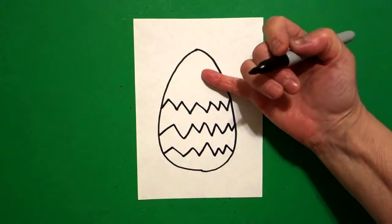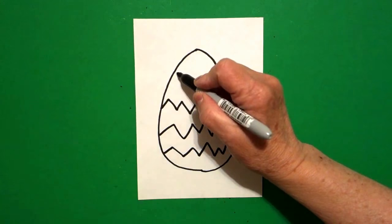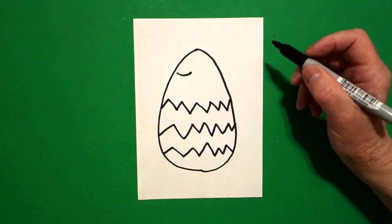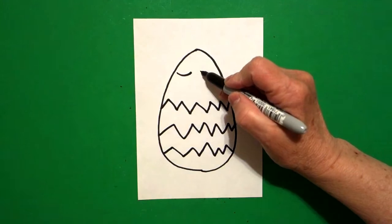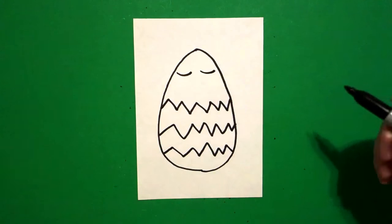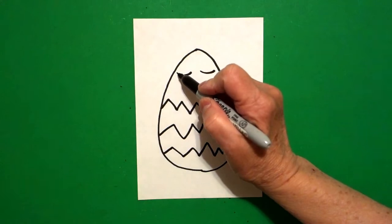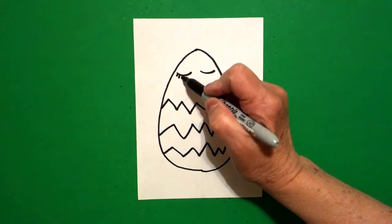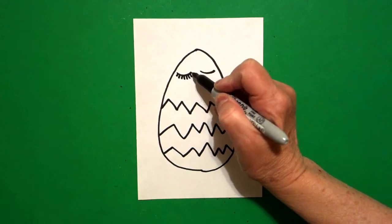I come back to the top. On the left, I draw one curved line. On the right, I draw another curved line. I go back to the left and draw little straight lines all the way across.